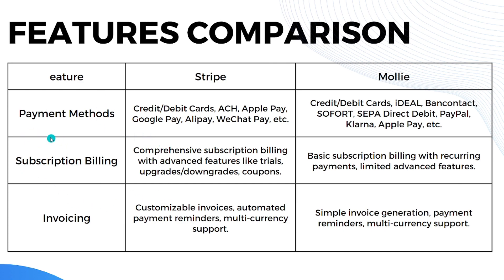When it comes to payment methods, Stripe has credit/debit cards, ACH, Apple Pay, Google Pay, Alipay, WeChat Pay, and more. While Mollie offers credit and debit cards, iDEAL, Bancontact, Sofort, SEPA direct debit, PayPal, Klarna, Apple Pay, and more.